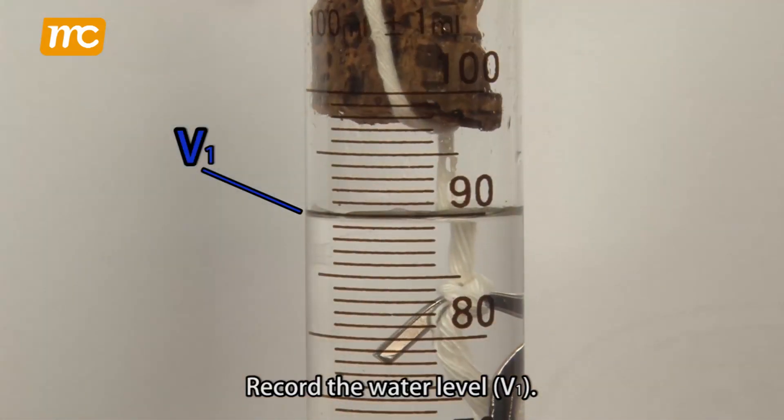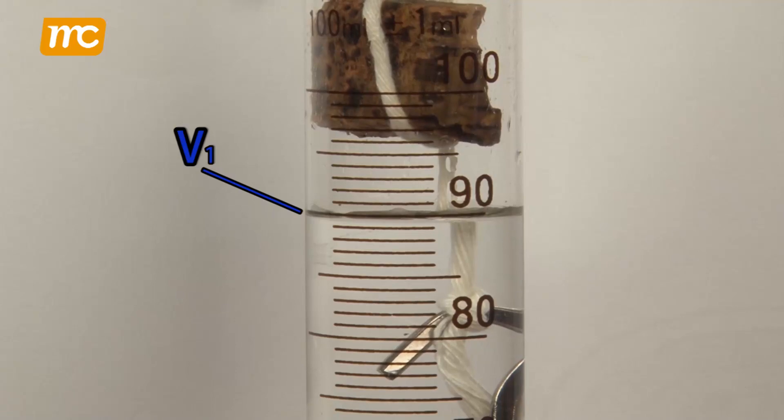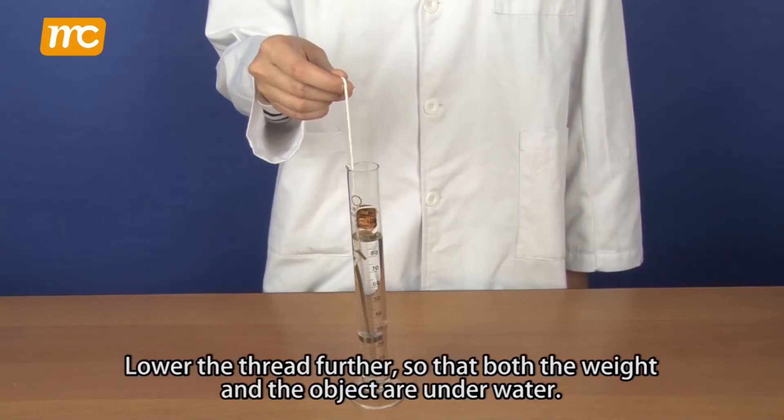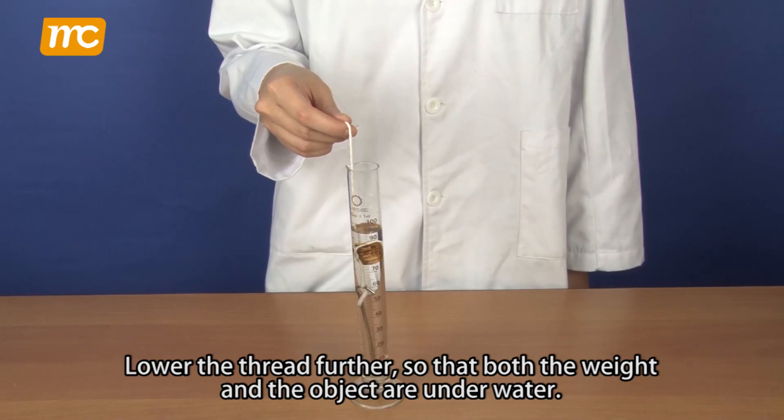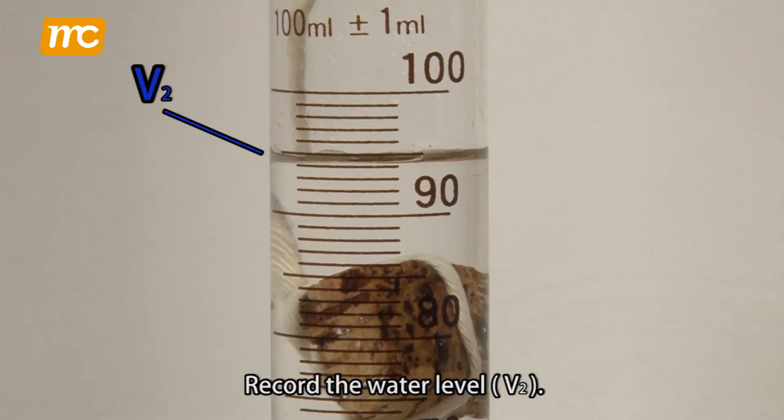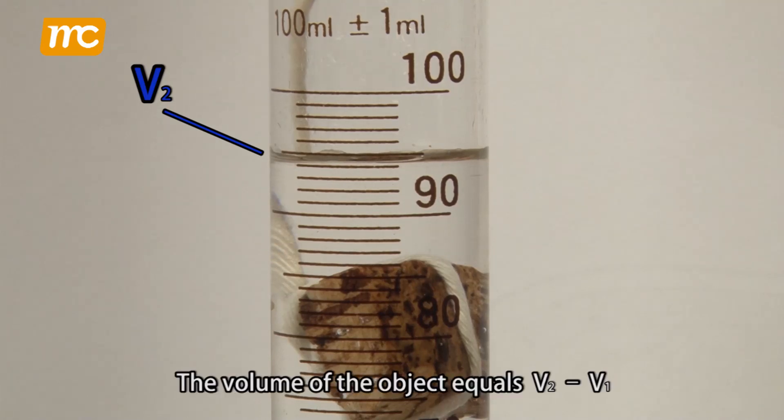Record the water level, V1. Lower the thread further so that both the weight and the object are underwater. Record the water level, V2. The volume of the object equals V2 minus V1.